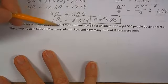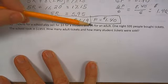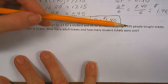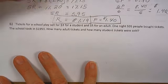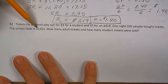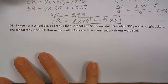Tickets for a school play sell for three bucks for a student and five dollars for an adult. One night, 595 people bought tickets and the school took in nearly $2,000. Who bought how many tickets?